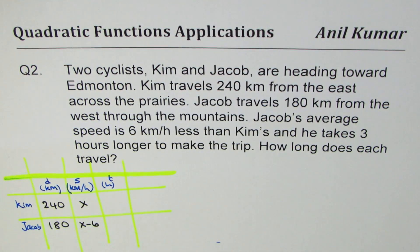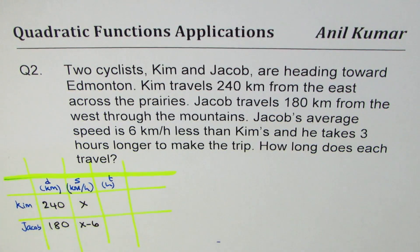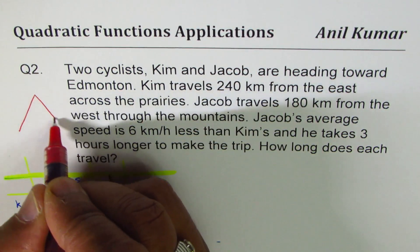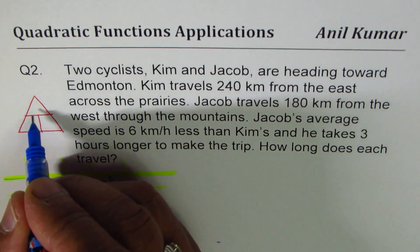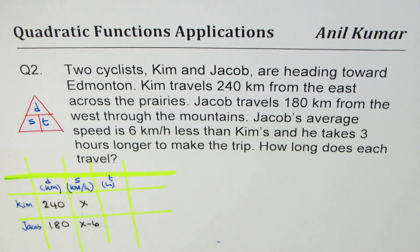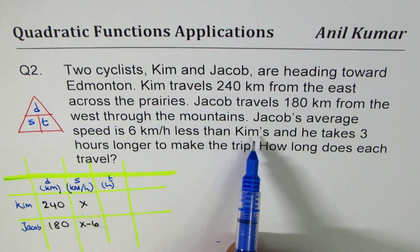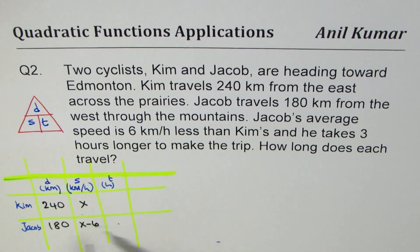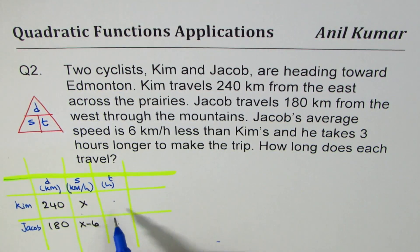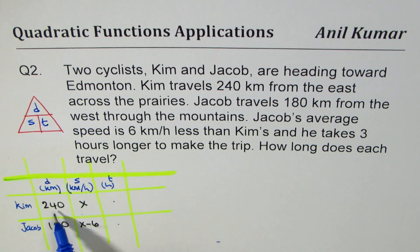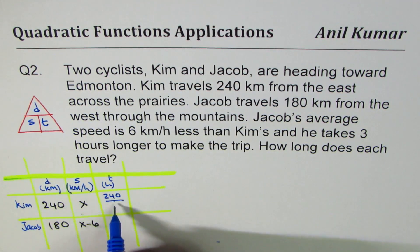Do you see that? So that is how, while reading, you have to fill in this table — distance, speed, and time. Remember the relation between distance, speed, and time using this triangle: distance is the product of speed and time. Jacob takes 3 hours longer to make the trip, and we need to find how long each travels.